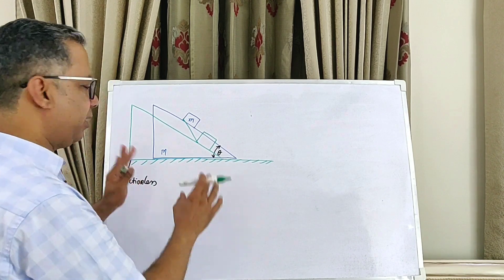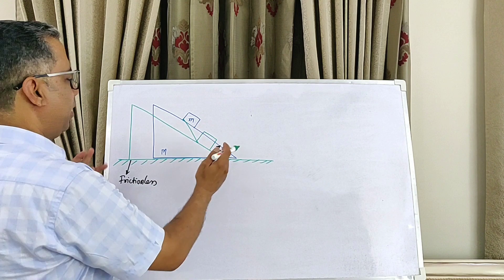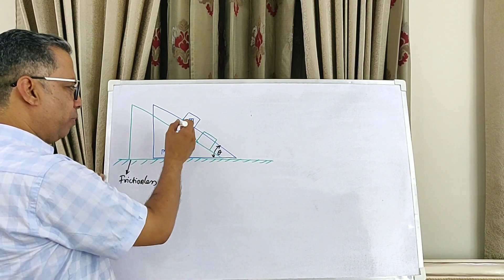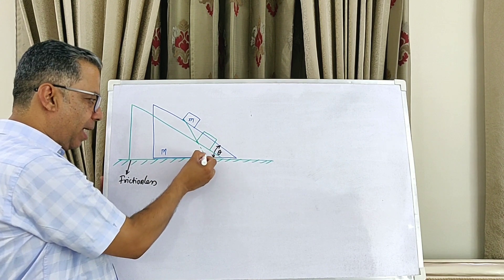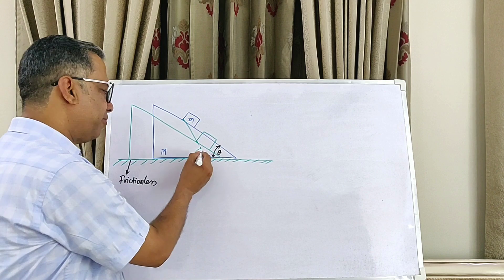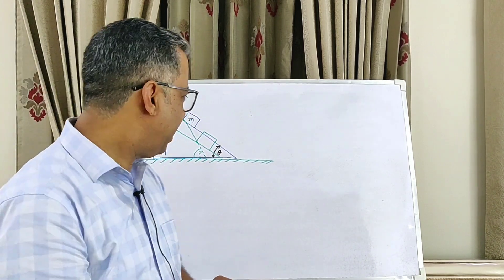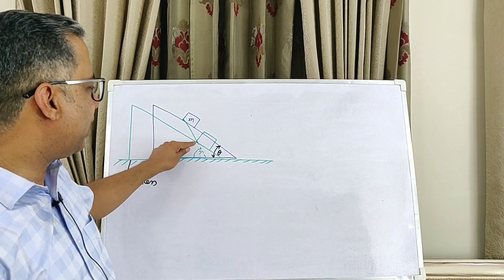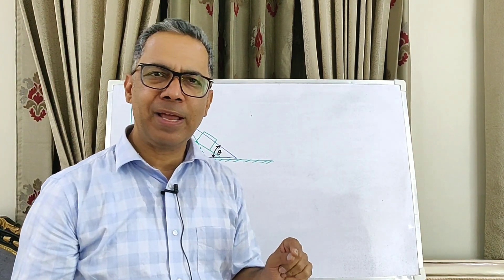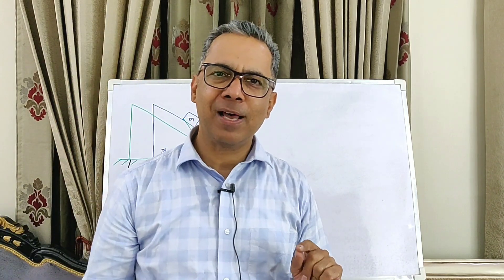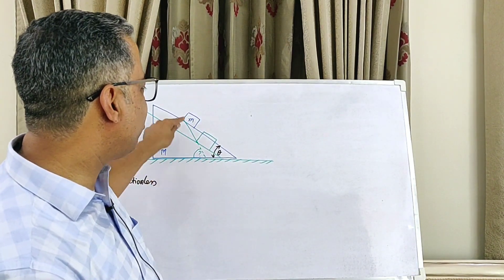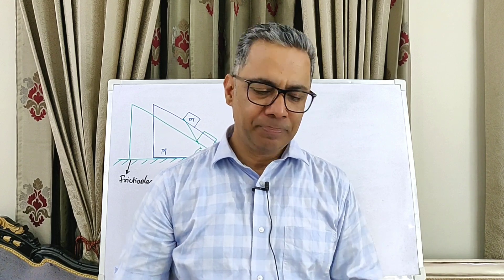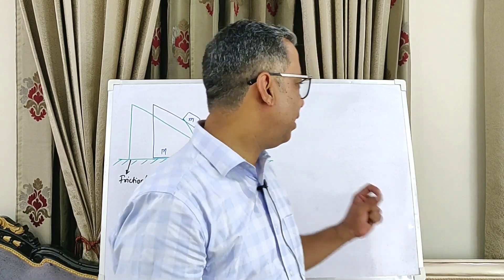Once the system is released, the wedge moves to the left and the block moves down along the slope. If we trace the motion of a point on the block, it appears to move along a line — but unfortunately we are not aware of the angle of that line. We don't know the direction of motion of the block in the ground frame, which makes it difficult to resolve forces and write equations.